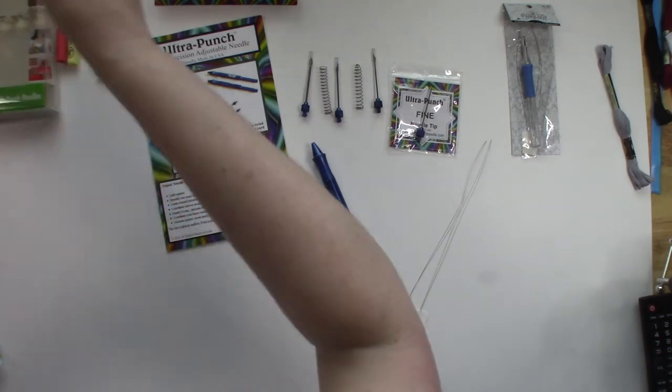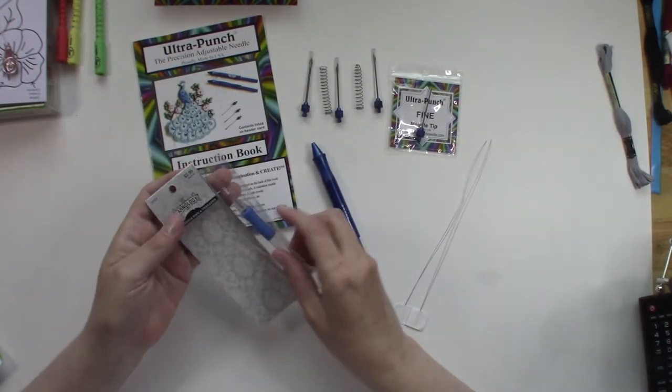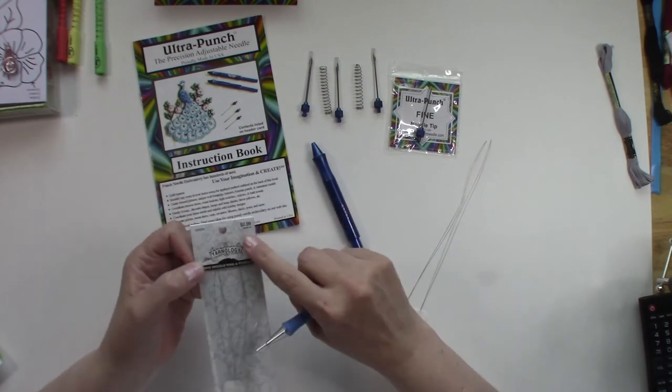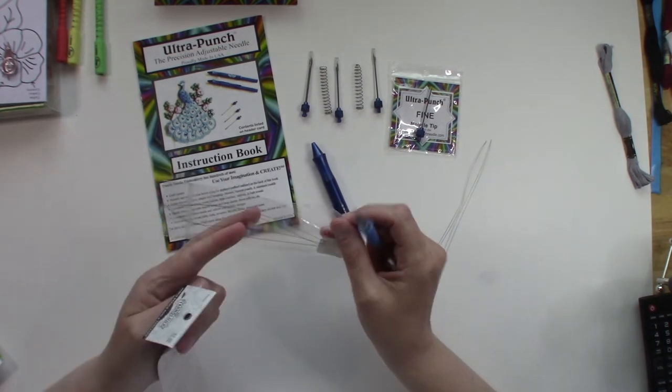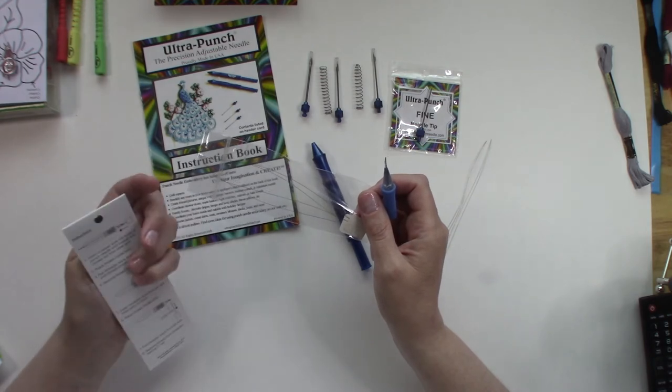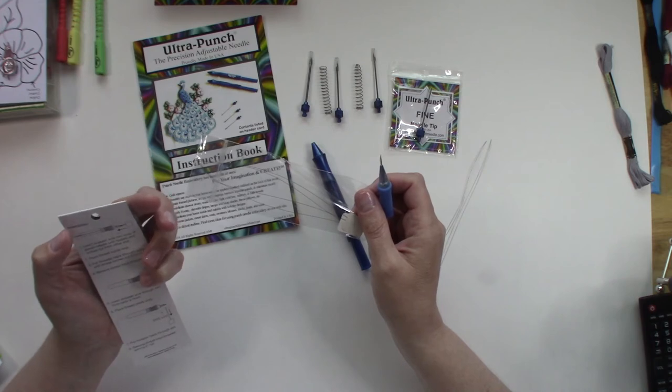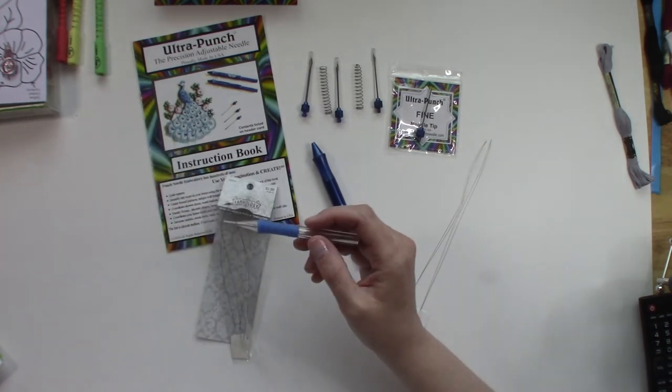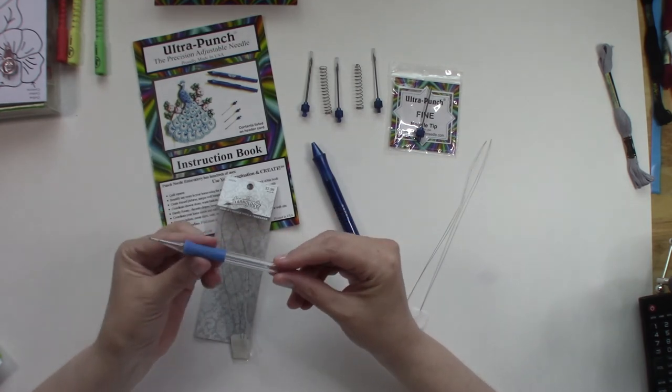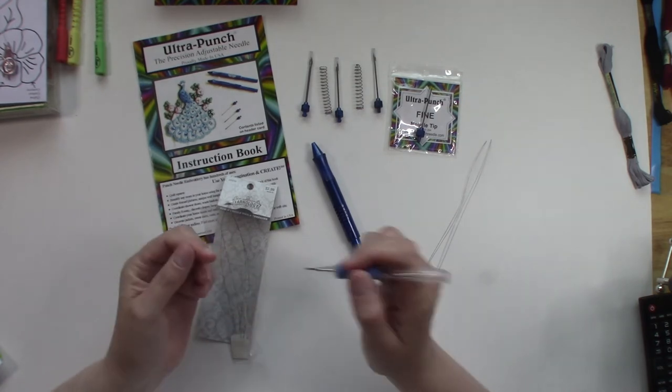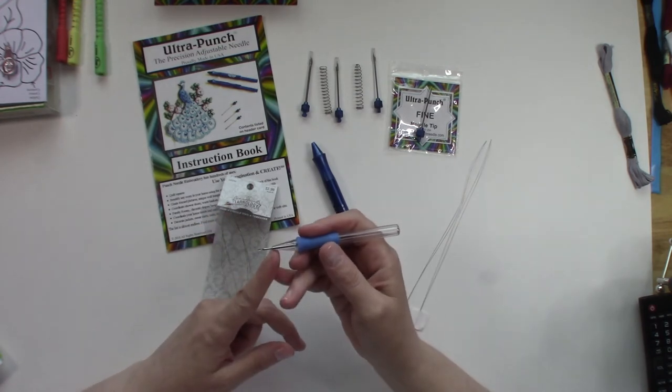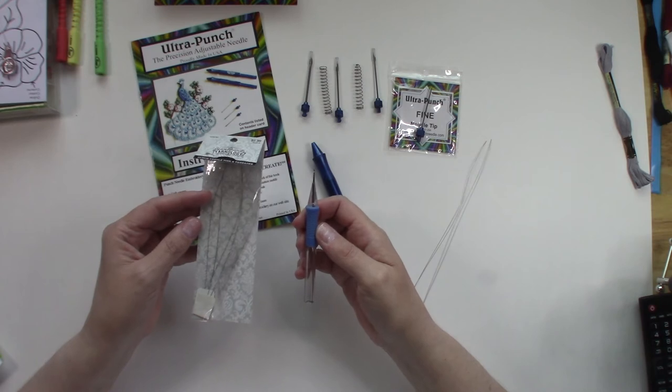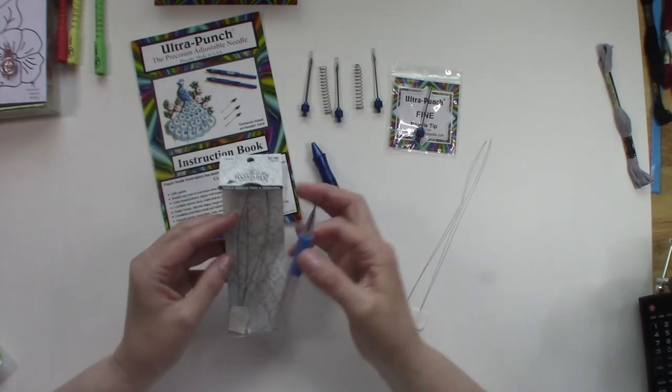This set also does come with its needle threader. Then there is a hook made by Yarnology. I believe I got this one either at Walmart or at Joann's and it was $2.99. It does come with your two needle threaders as you can see, but there is a con to this needle. It is a set depth needle. You cannot adjust the needle length, so when you're punching, your loop will be one size and one size only. Nothing's wrong with this needle, it's just that you can't adjust your loop size and I will show you that in a previous video.